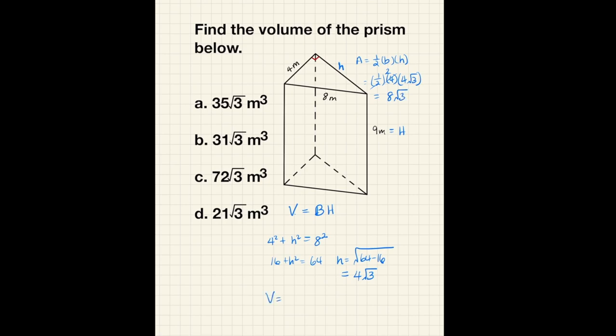And our volume is going to equal the area of the base which is equal to 8 times the square root of 3 times the height of the prism which is 9 and we get 72 square root of 3 meters cubed.